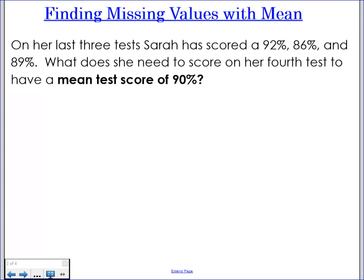So she has taken three tests so far. She's gotten a 92, she's gotten an 86, she's gotten an 89, and then she's going to be taking a fourth test. And that fourth test, I don't know, but I do know that I want the mean of all four of these tests to be 90%. Okay, so let's think about this for a second.